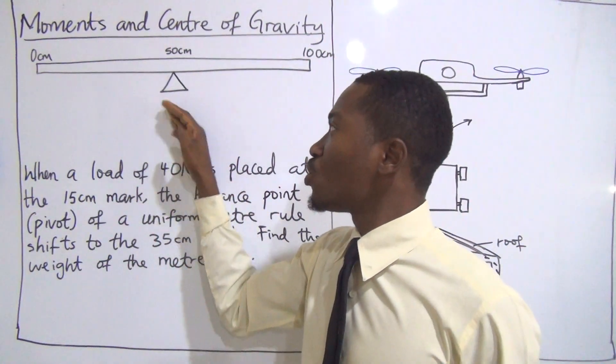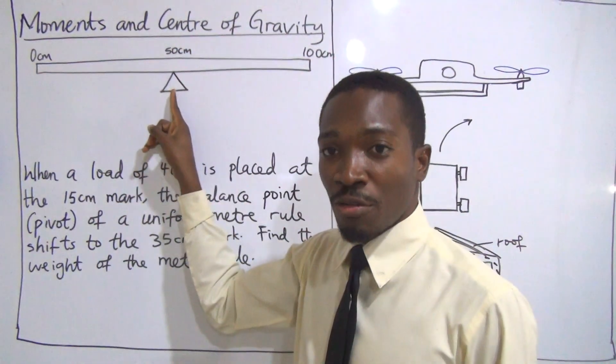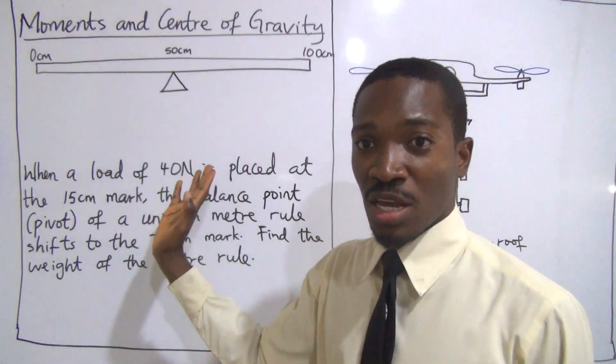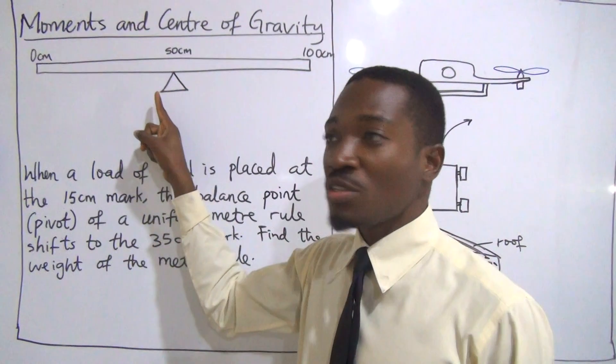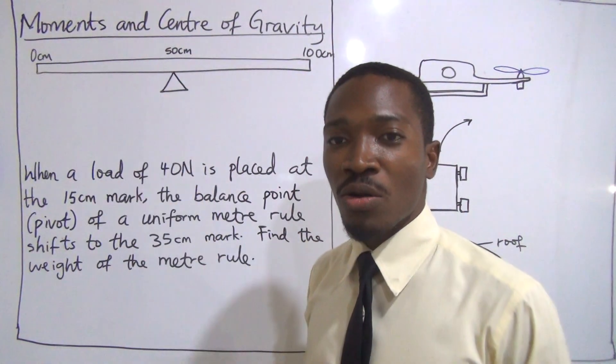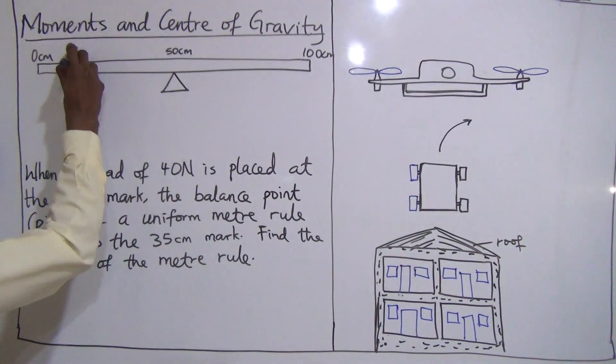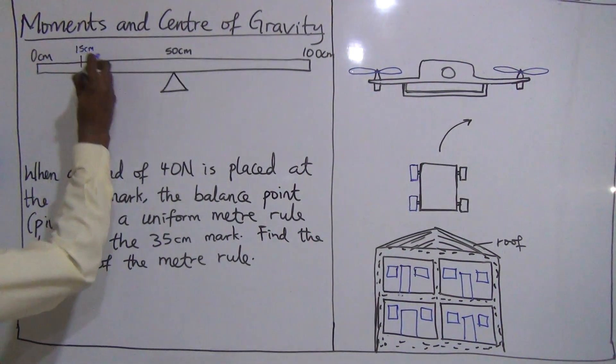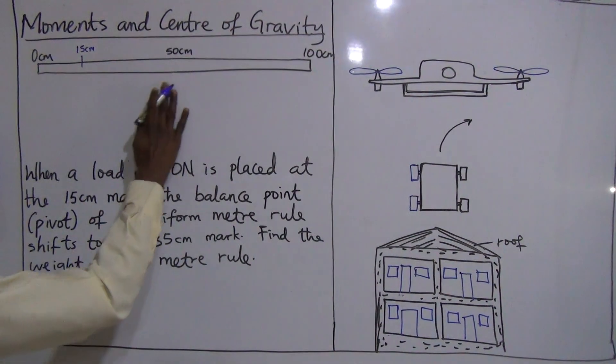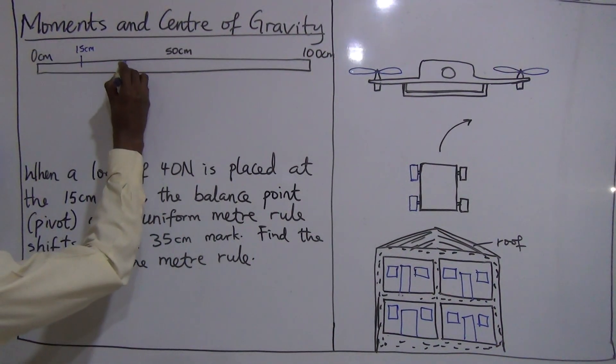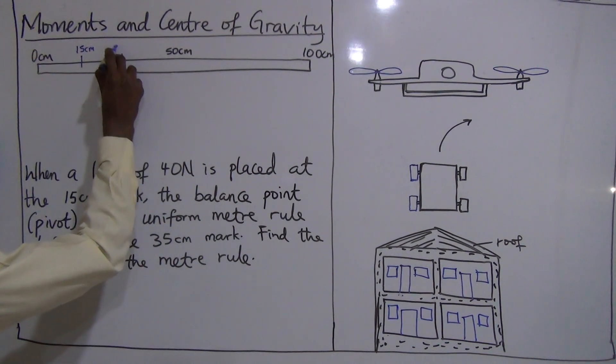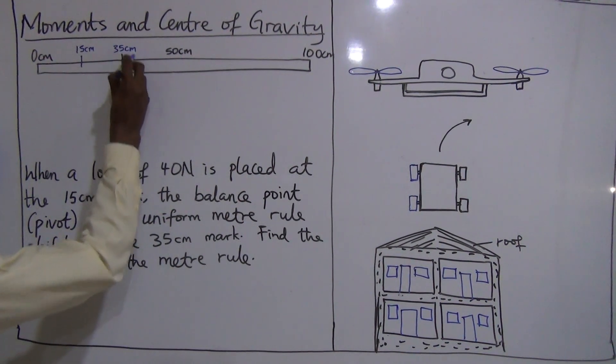Now let us assume we decide to shift the pivot. When you place it on this pivot, then it balances horizontally. What if we decide to shift this pivot to another mark? Let's assume we decide to shift the pivot to the 35 centimeters mark.